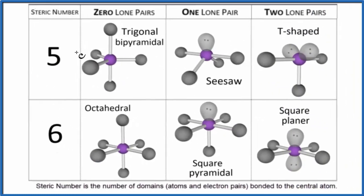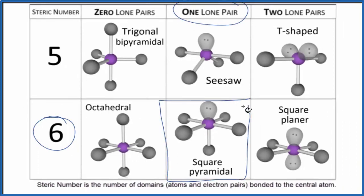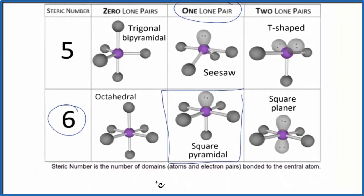Looking at this table, we'll see that if we have six groups and one of them is a lone pair, we end up with the molecular geometry of square pyramidal. If we look at the AXN notation, A is the central atom.